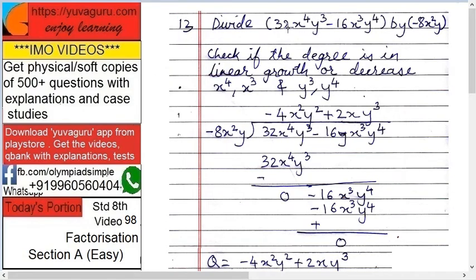Next, divide 32x raised to 4 y cubed minus 16x cubed y raised to 4 by minus 8x square y. First, check that dividend and divisor are in proper order. In the dividend: x raised to 4, then x cubed — that's decreasing order — and y cubed then y raised to 4. The degree is in linear increase or decrease: x4, x3, y3, y4. That's correct.